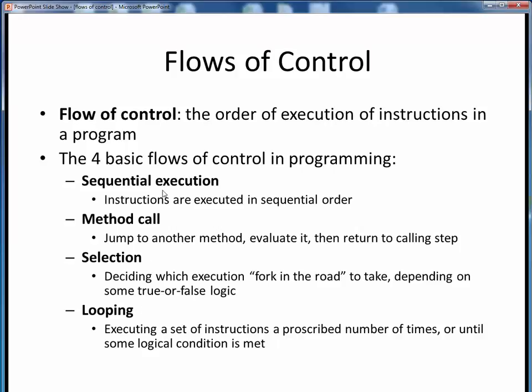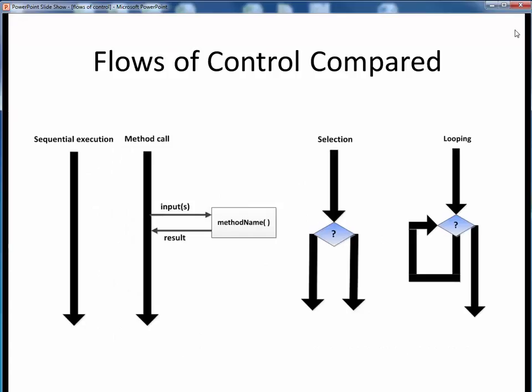Let's take a quick look at these four flows of control visually. Here we see a nice summary comparison of the four basic flows of control in programming. As an aside, these types of visual depictions are known as flowcharts in programming, and these are very simplified, generalized models of actual program flow.